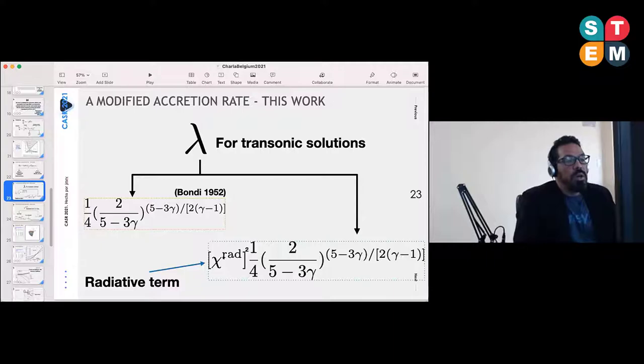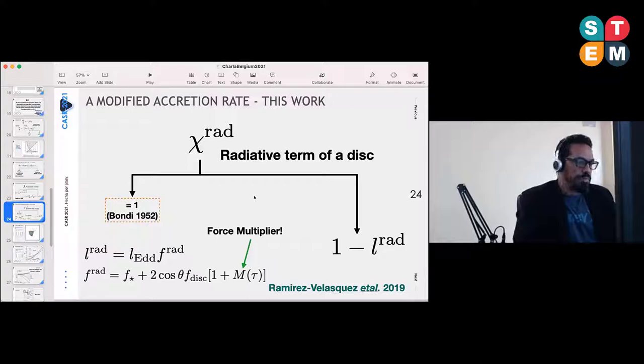The structure of this radiative term is as shown here. In the case of Bondi pure gravitational work, this would be exactly equal to one. In the case of this work, there are two terms basically. When you have this force multiplier equal to zero, you are adding electron scattering. When you switch it on, then you recover the contribution of the spectral line to the momentum equation.